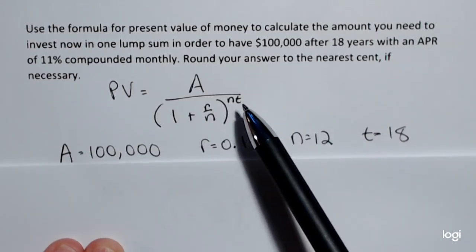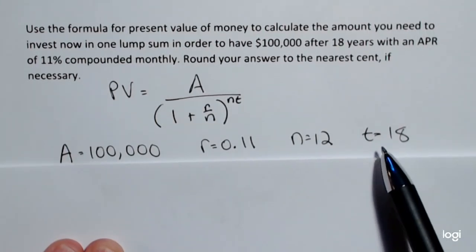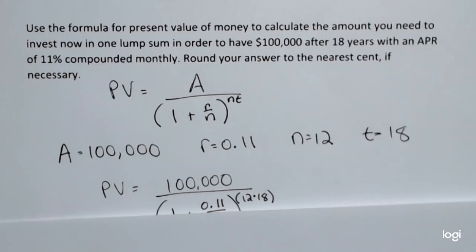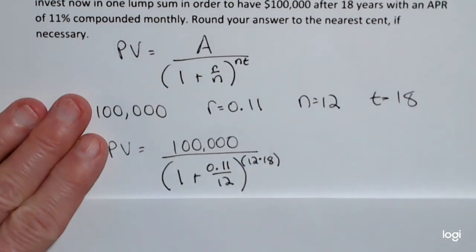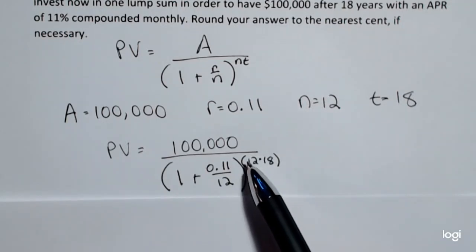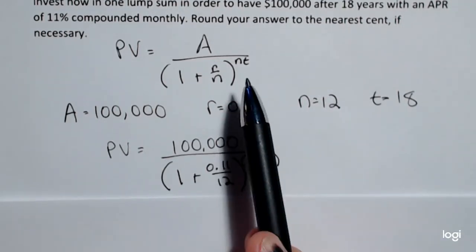T is time in years, and we're told that we have 18 years. So plugging all of the pieces into the formula, this is what it looks like. Notice I put parentheses around the exponent to indicate that the 12 times 18, this N times T, is in the exponent.